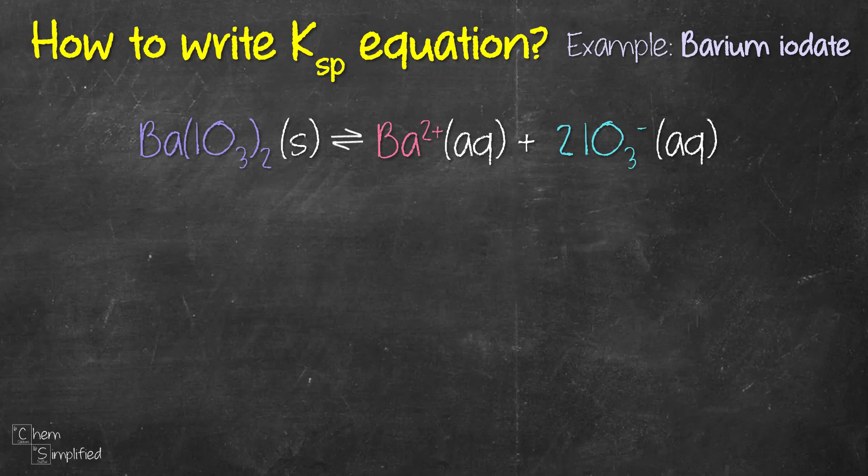To write the Ksp expression, basically it's the product of the concentration of the ions that are present when our solid dissolves. So the two ions that we have is barium 2+ ion, that's its concentration, and our iodate ion, which is IO3- concentration. Now remember we have that 2 in front of iodate ion. Now that 2 is going to turn into power of 2. So this is the expression for Ksp of barium iodate.